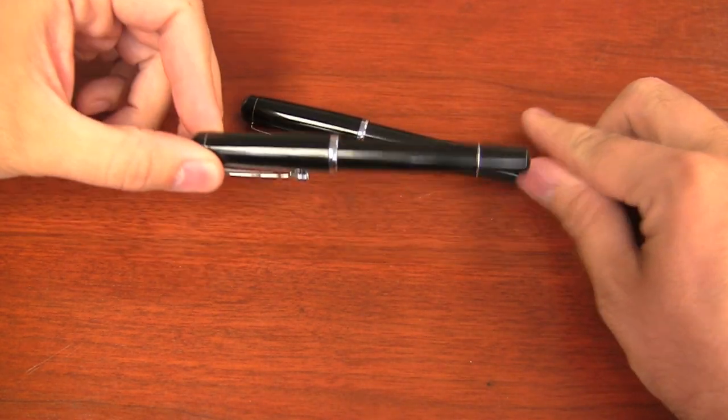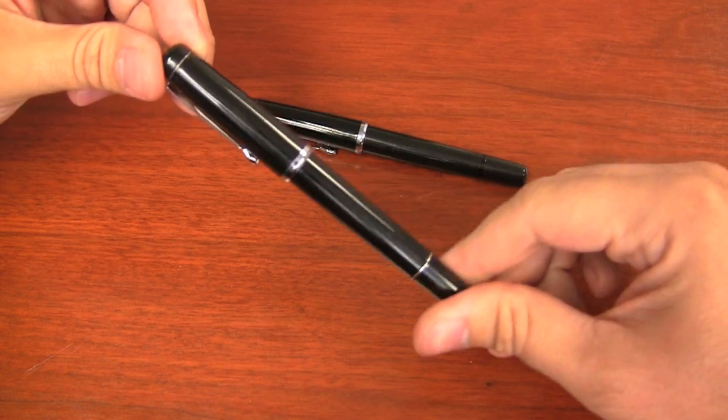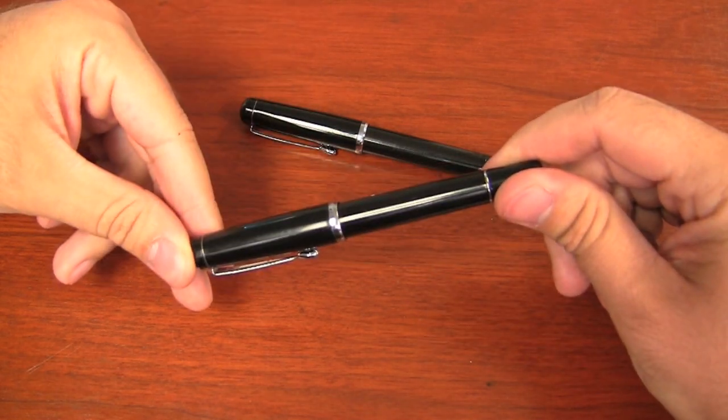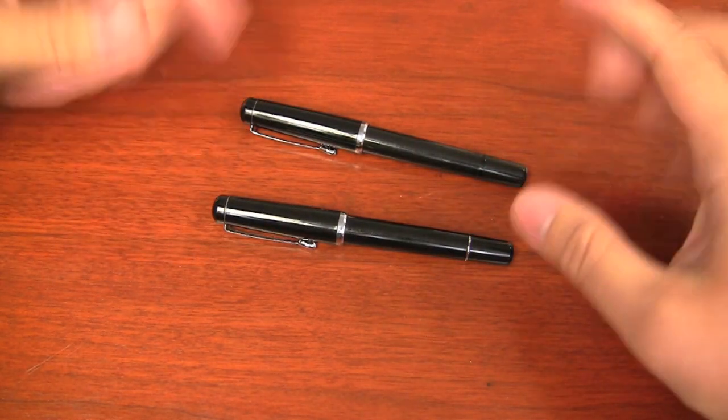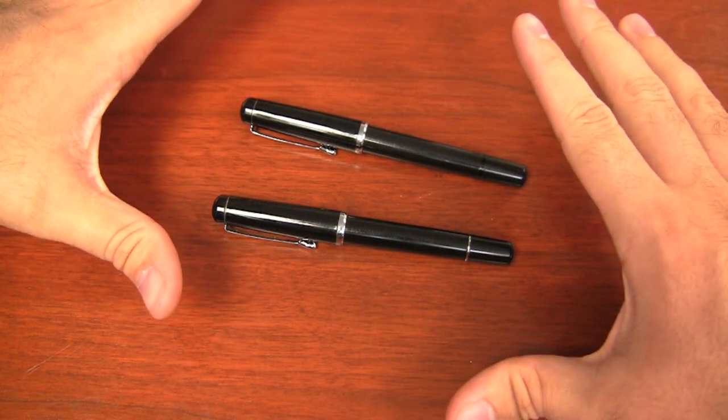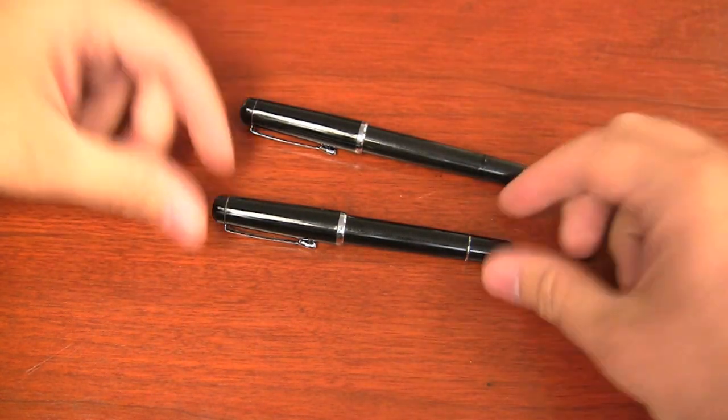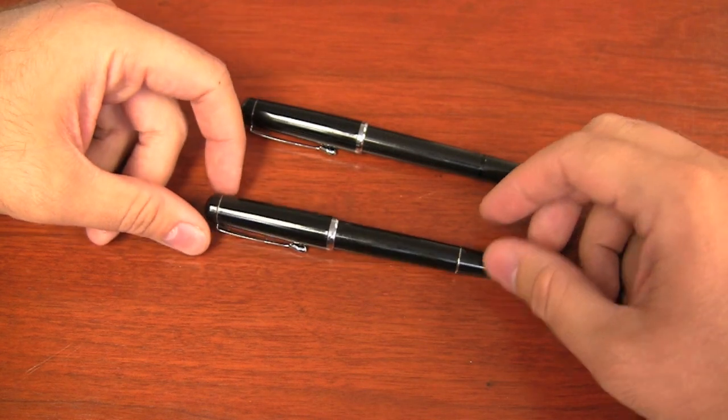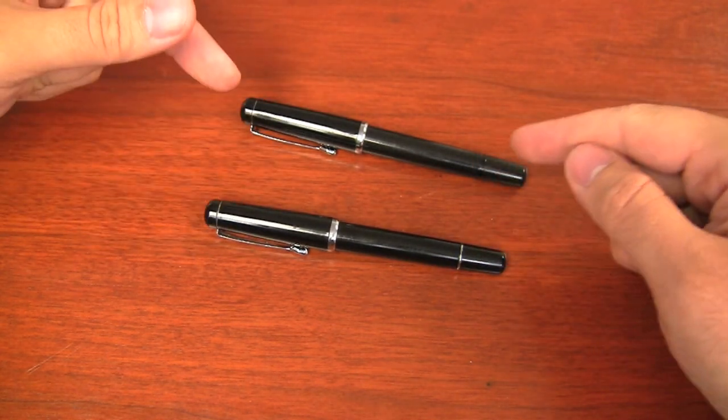So this is really what you're working with now and what you should really focus on more. I just thought since these are the previous Conrad black pens that are out there, it was worth comparing the two just so you could see that there are some minor differences. And if you happen to see anybody that has any of these older black Conrads, you know the difference between them.